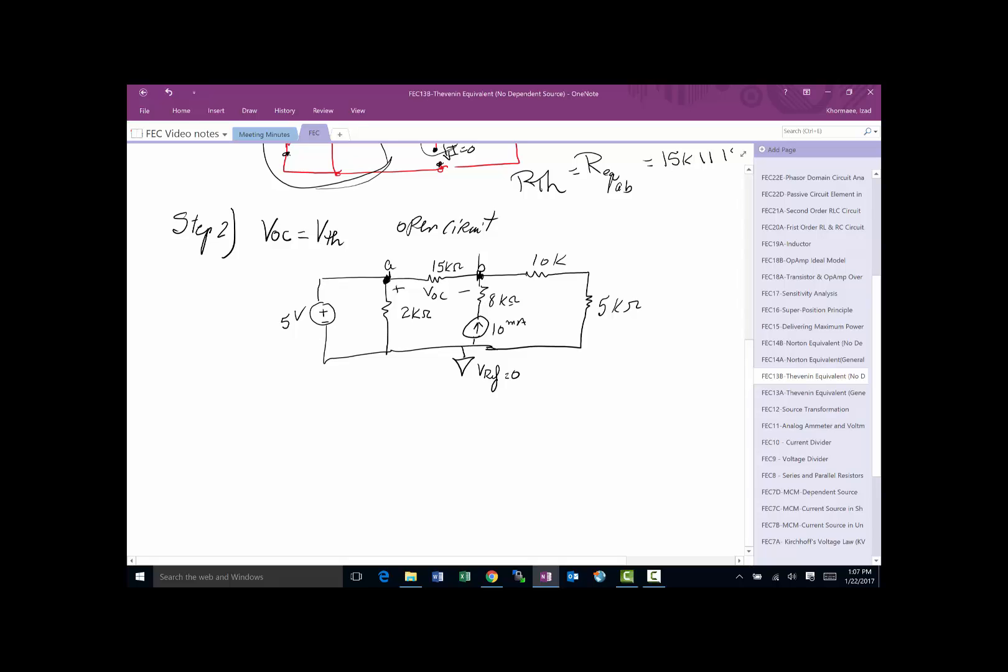All right. And great. It looks like this is going to be really easy because I have one node here, VA, one node here, VB. So we've got two nodes that I have to write an equation for.